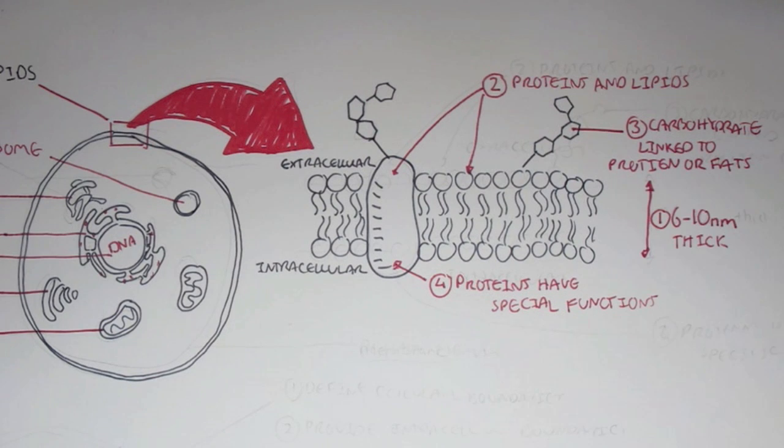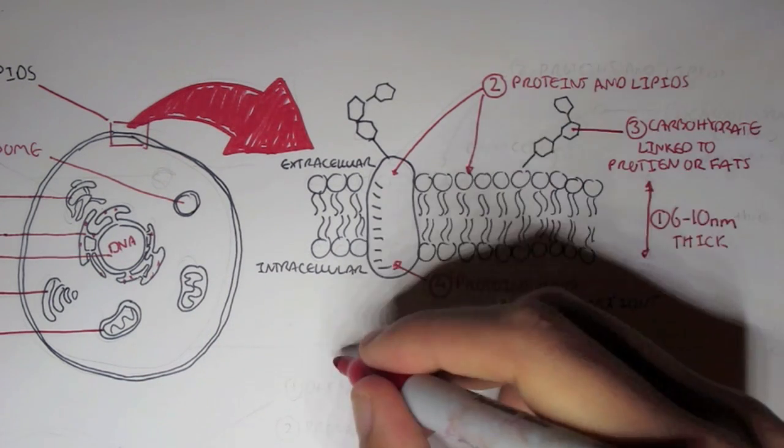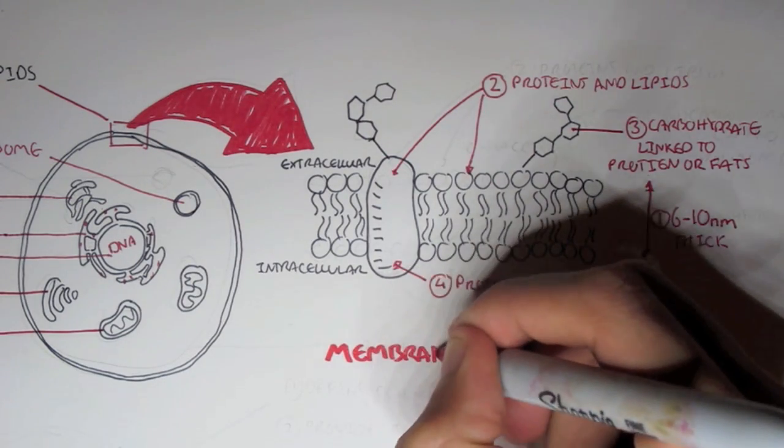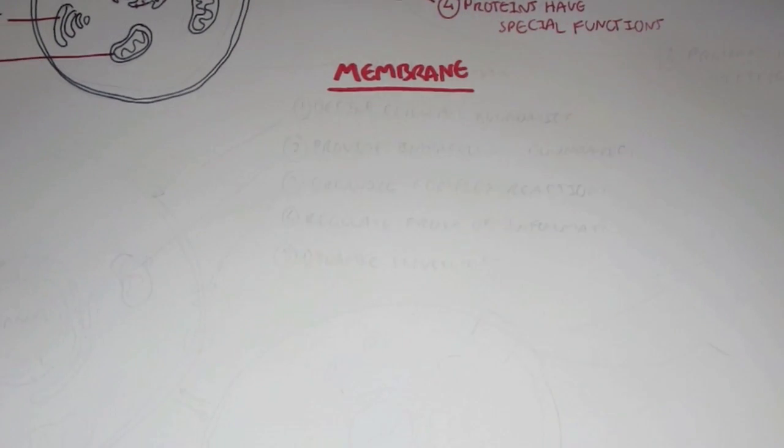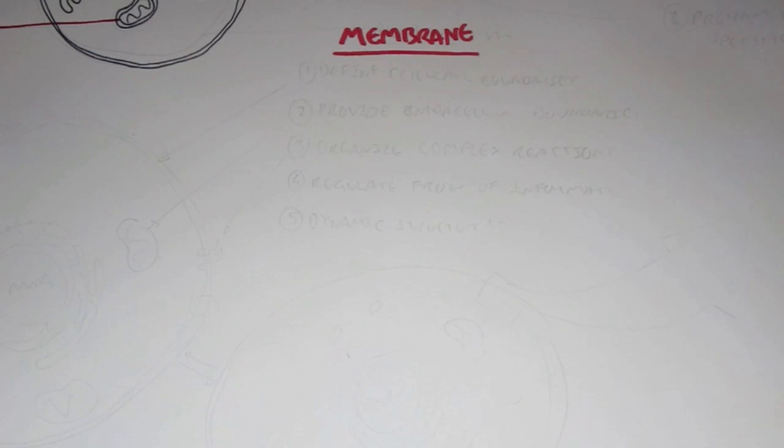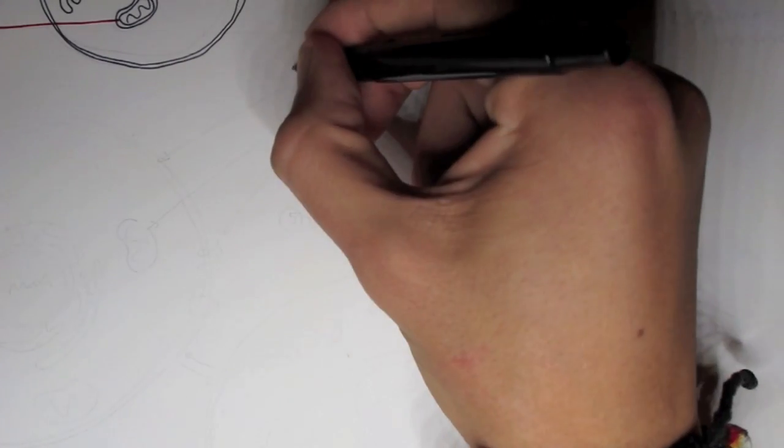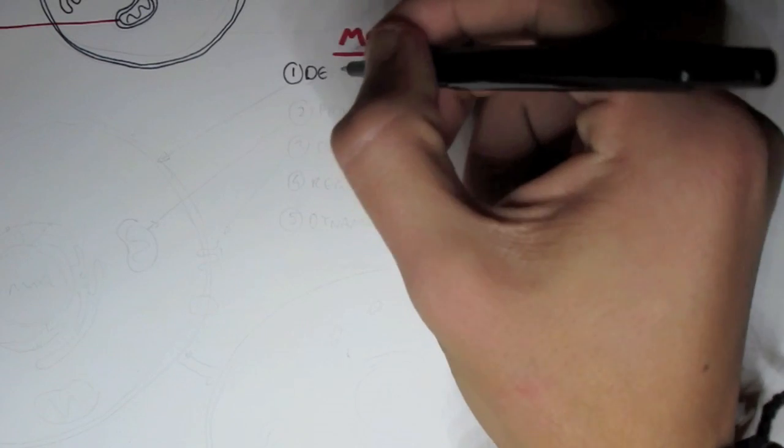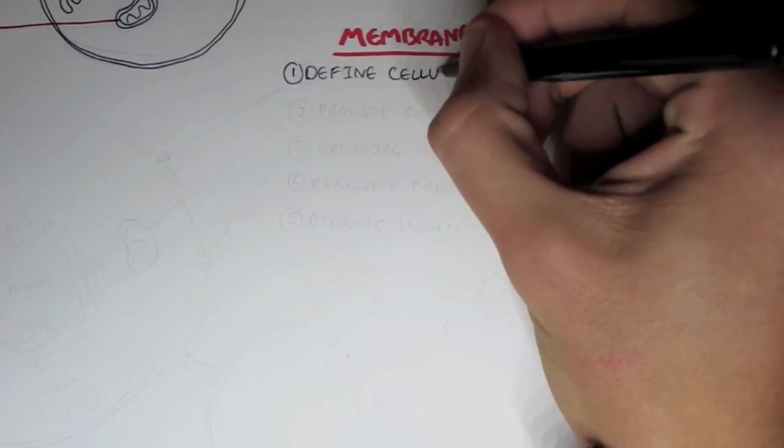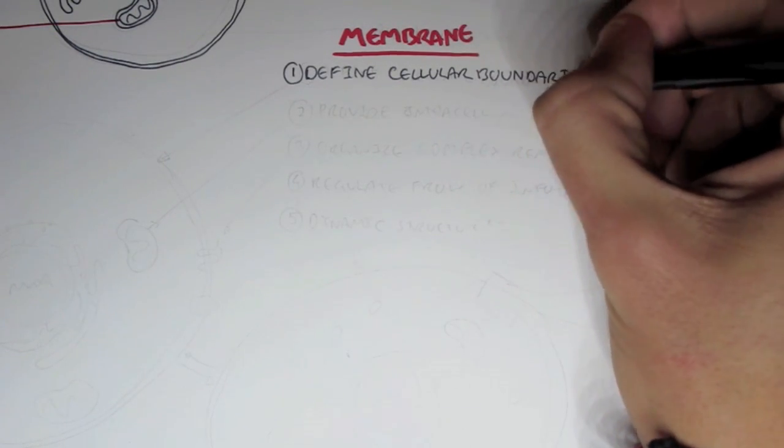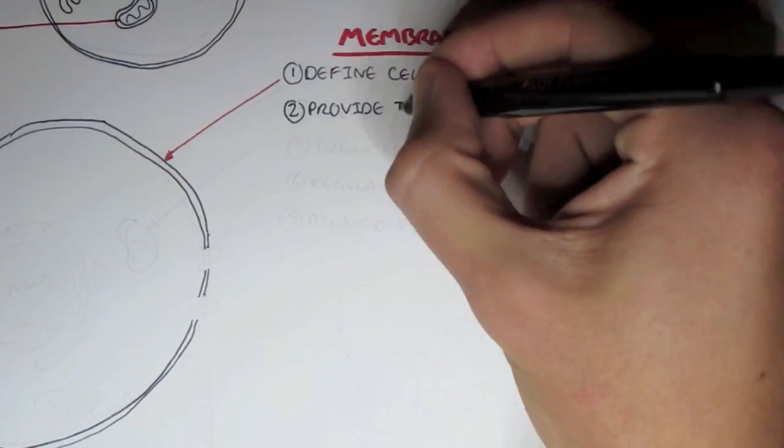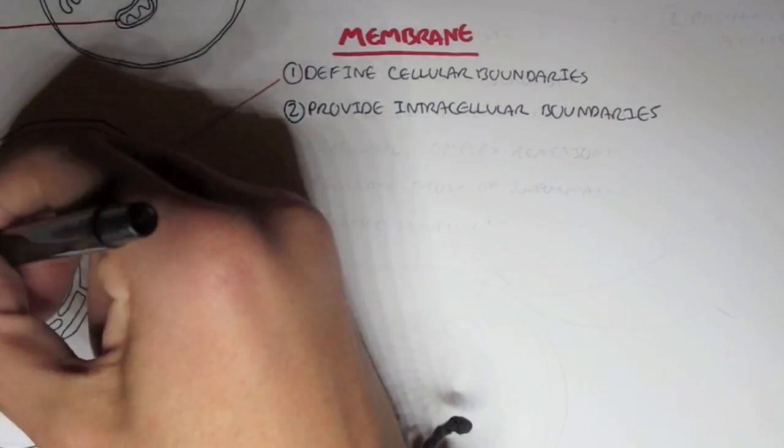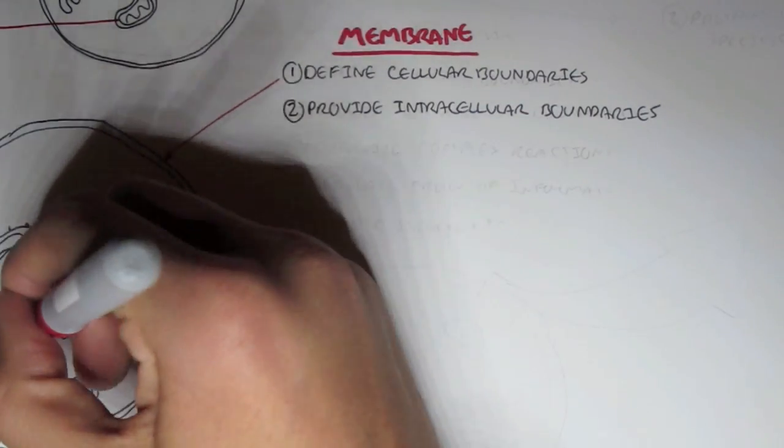And they have a special role. The protein structures actually have a special function or role within the cell, such as being a receptor. So let's look more closely on the functions and the roles cell membranes have. Five points. Number one, cell membrane defines cellular boundaries. So the statement is obvious, it just defines the boundaries. So it protects the cell. Two, it provides intracellular boundaries. So organelles have boundaries such as the nucleus with the DNA or mitochondria.